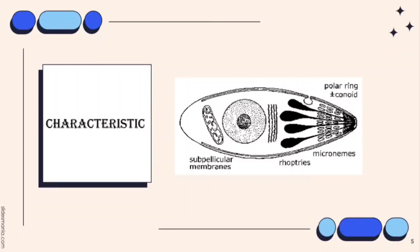Polar rings composed of microtubules and, in some species, a conoid, which lies within the polar rings. At some point during their life cycle, members of the Apicomplexa either invade or attach to host cells. It is during this invasive stage that these apical organelles are expressed, as well as the sub-pellicular membranes, which are actually cortical alveoli.